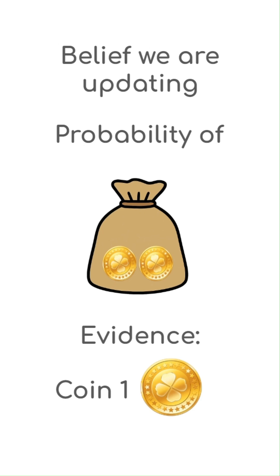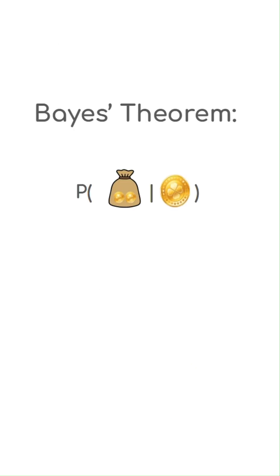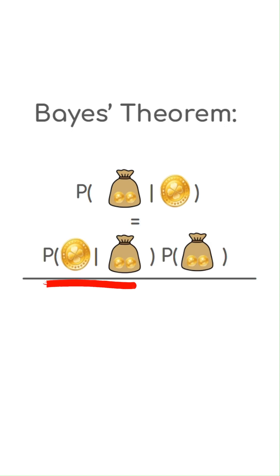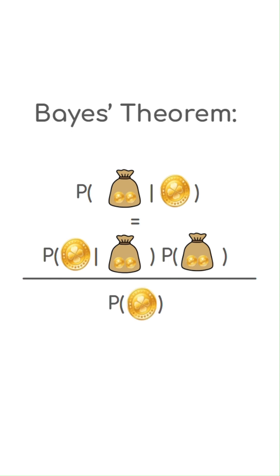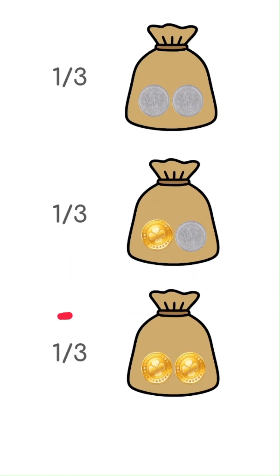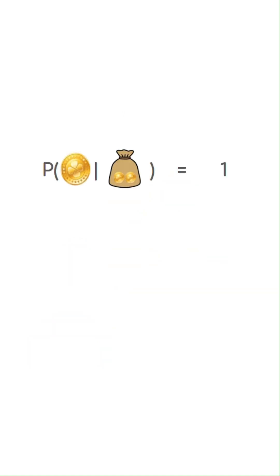So if we restate Bayes' equation for our problem, we are finding the probability of the bag being the one with two gold coins, given that the first coin is gold. That is equal to the probability of picking a gold coin from that bag times the probability of picking the bag with two gold coins in the first place, divided by the probability of picking a gold coin. Remember, you picked the bag randomly, so the probability of picking the bag with two gold coins is one-third. Also, with some thought, we can conclude that picking a gold coin out of the bag with two gold coins is one.